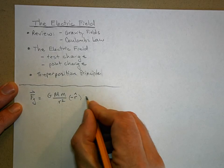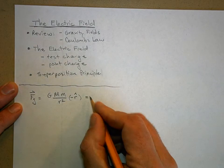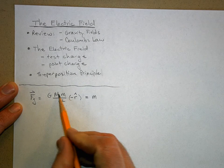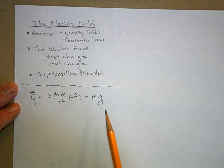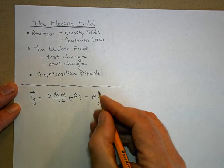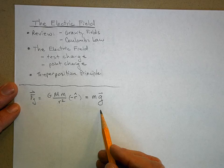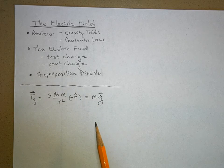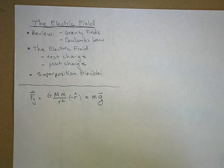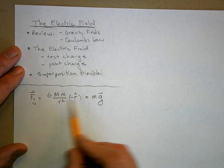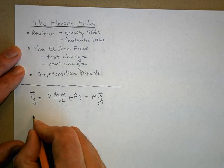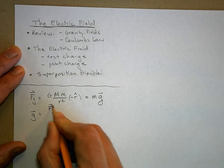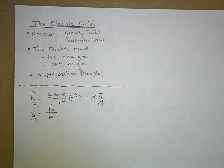The force of gravity was also equal to m times g. G is what we called the acceleration of gravity, but we can also think of it as a gravitational field. This mass here can be thought of as a test mass — a little chunk of mass we use to test the gravitational field around a planet or star. So we defined the gravitational field g as the force of gravity divided by this test mass.